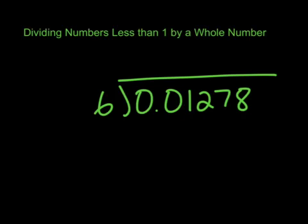Now we're going to try dividing numbers less than 1 by a whole number. Here you can see we have 0.01278 and we're going to divide this by 6.